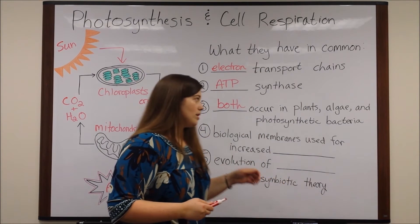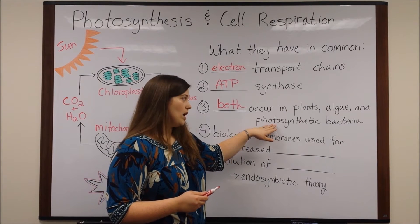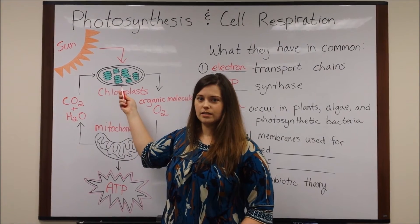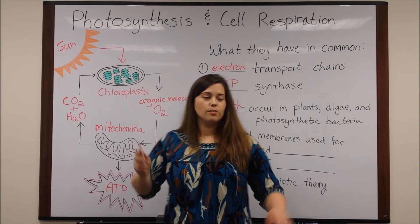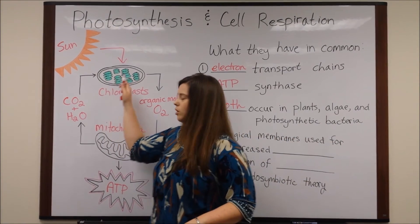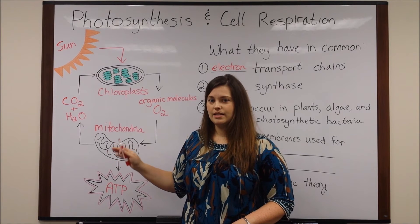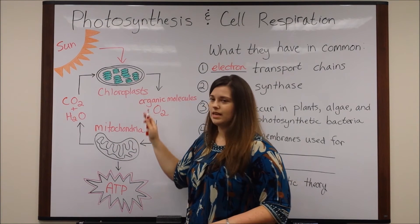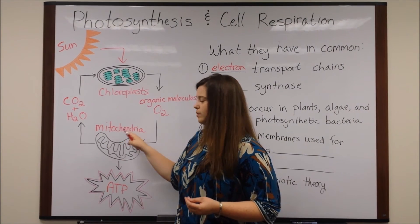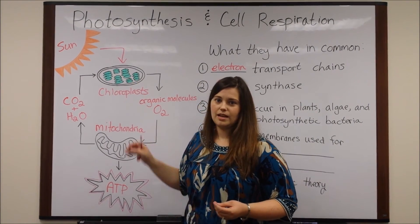As a side note, photosynthetic bacteria — you might be saying, how can they have photosynthesis if they don't have chloroplasts? That's true. Bacteria are prokaryotic cells and they lack organelles, so they don't have chloroplasts and they don't have mitochondria. Instead, the enzymes used in photosynthesis and cell respiration are part of their plasma membrane, instead of being in compartmentalized organelles within the cell.